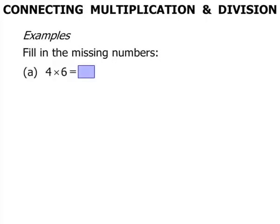Let's look at some examples now. We're asked to fill in the missing numbers. In part A we've got 4 times 6 equals something, also that 24 divided by 4 equals something else, and that something divided by 6 equals 4.